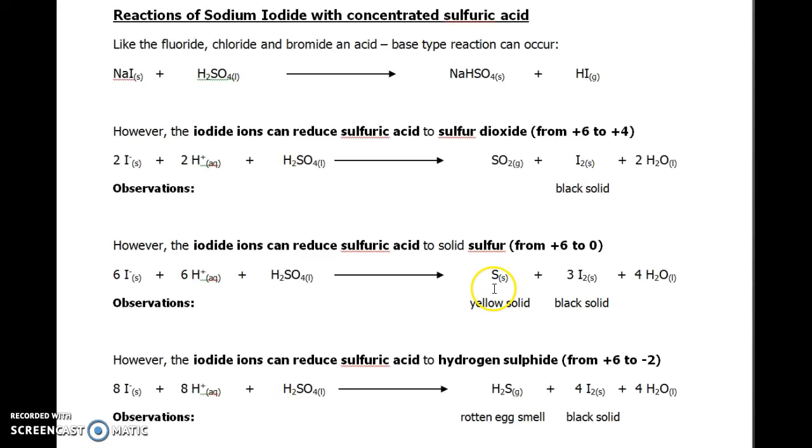For this reaction, we tend to write sulfur with the formula S because it gets very messy if you think about sulfur being S8. The important thing here is that sulfur is going from oxidation state +6 down to zero, gaining six electrons from six iodides. Those iodides will be converted into iodine, so we're left with three I2.